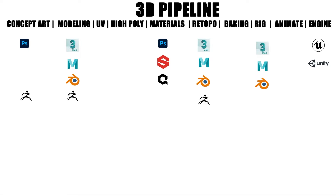Then you're going to animate it. In this case animation is not like you would do for film where it's camera-based — you're basically creating several different smaller cycles, like a walk cycle, a run cycle, a jump animation, and then you're putting that usually in one big file. The pipeline changes from game to game, company to company.